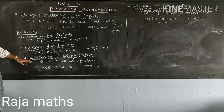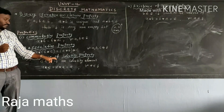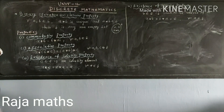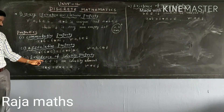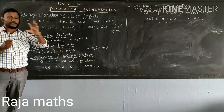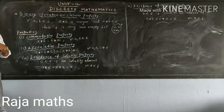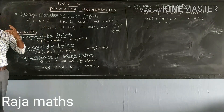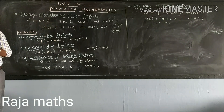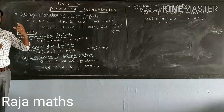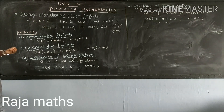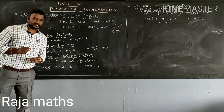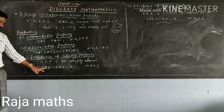Next one is existence of identity property. Now, e belongs to S. It is an identity element. If we have one value, we can collect a value — that is a. There is an element, that is a. Then a star e — we can collect that.